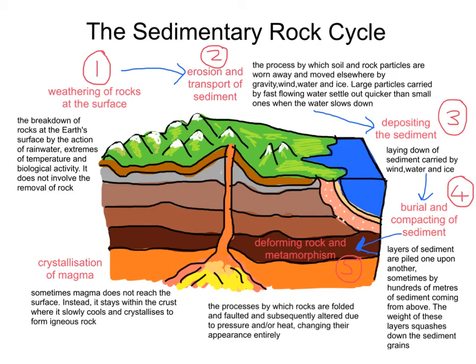That leads us into the final part of the cycle. We'll finish with number six, and that's the crystallization of magma. Often magma or molten rock does not reach the surface; instead, it stays within the crust where it slowly starts to cool and crystallize, and then we get the formation of igneous rock. That is the final part of the diagram we've been labelling. The last phase is the crystallization of magma, and then we can throw a little arrow going back to number one.